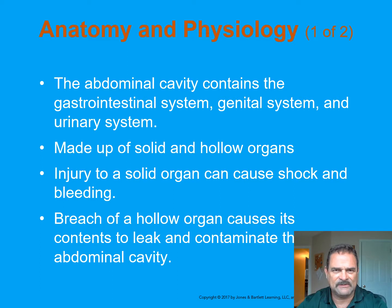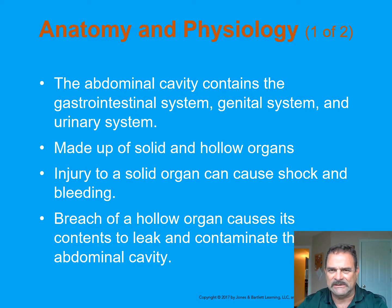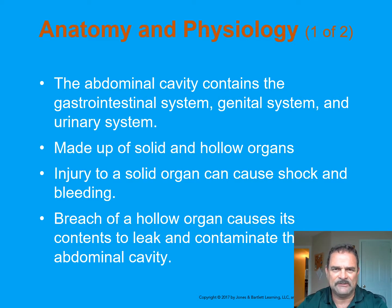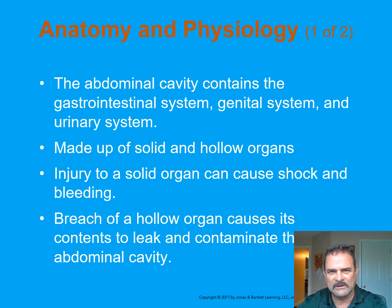A little anatomy and physiology of the abdominal cavity: it contains solid and hollow organs that make up three systems — the gastrointestinal system, the genital system, and the urinary system. Injury to a solid organ can cause a lot of shock and bleeding. If perforation of hollow organs occurs, the contents will leak and contaminate the abdominal cavity.